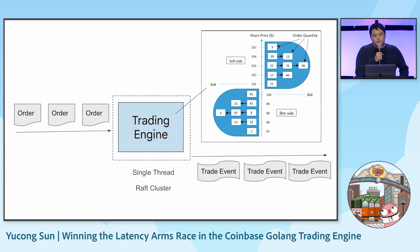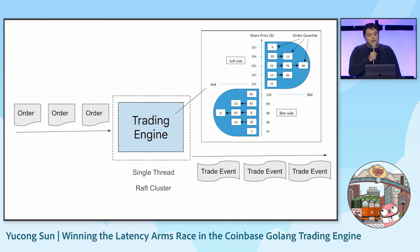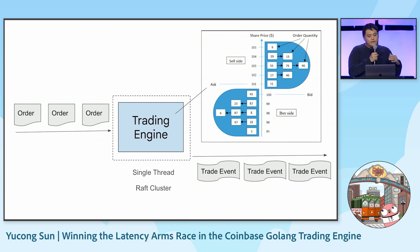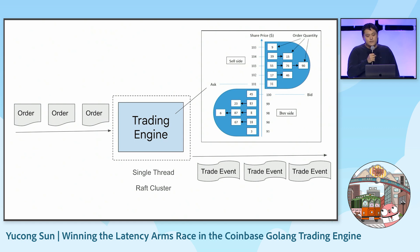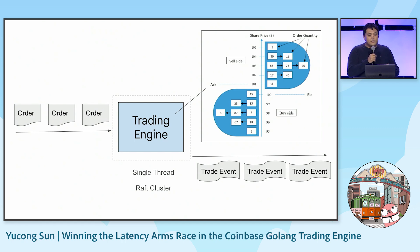A trading engine is a core component of an exchange. Basically, what it does is it serves a list of orders coming from the left side, and then internally maintains an in-memory data structure called an order book. If a buy order and a sell order match, they will generate a trade event, and the downstream system would change the asset or the money. By design, it's single-threaded, so all the orders coming in need to be processed in order.